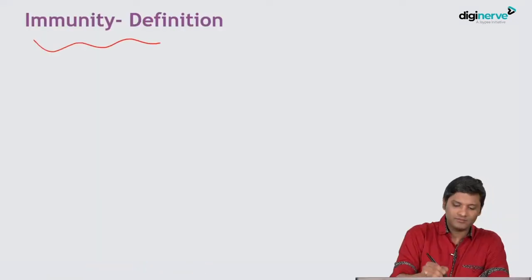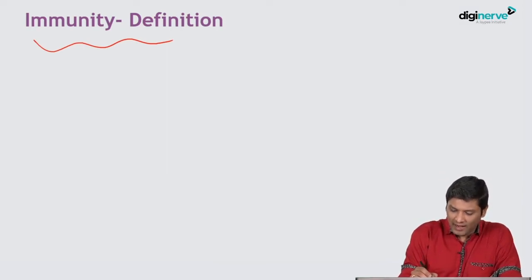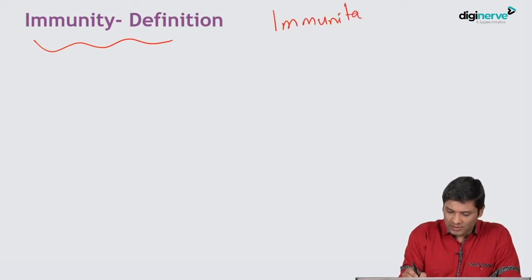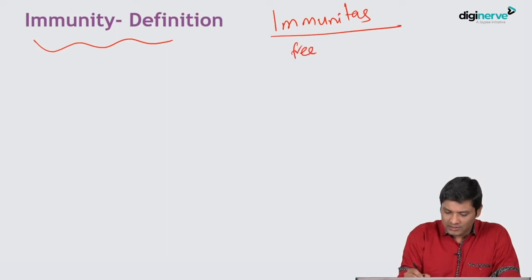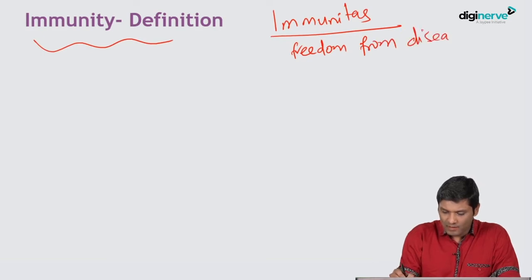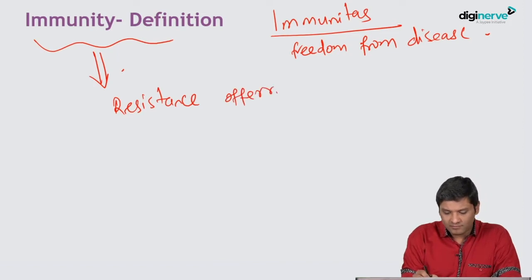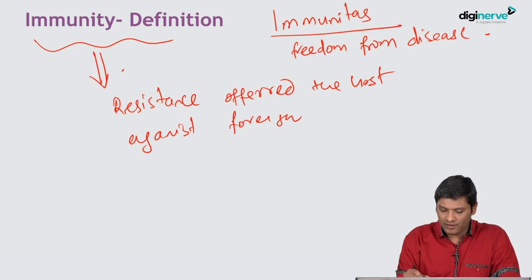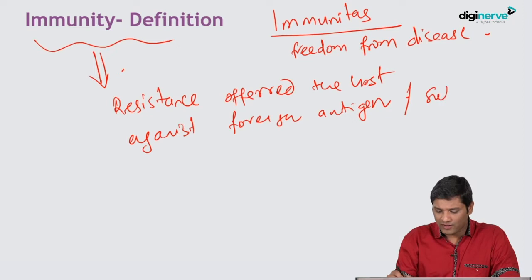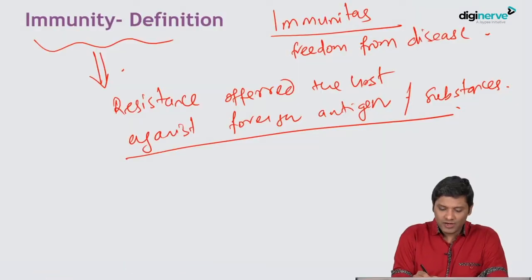What do you mean by immunity? Immunity has been derived from a Latin word called Immunitas. The meaning of this is freedom from disease. Immunity is defined as the resistance offered by the host against any foreign antigen or any foreign substance. The resistance we offer against a foreign substance can be present right from birth, or it can be acquired during the course of life.